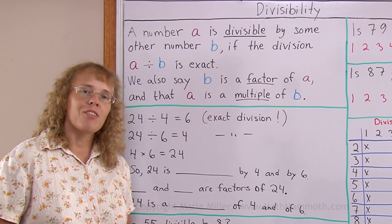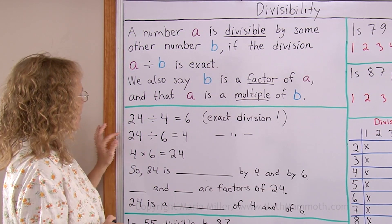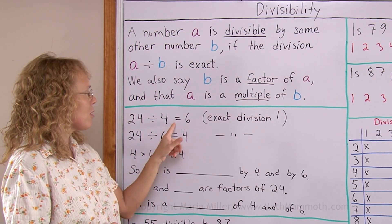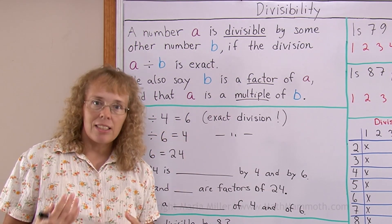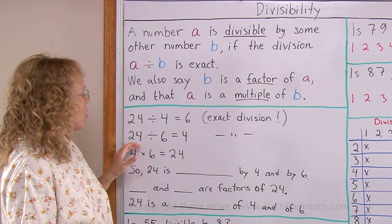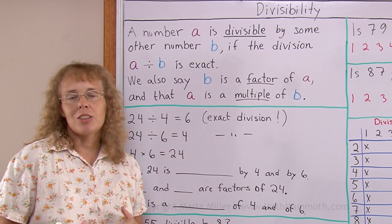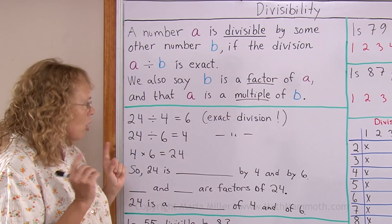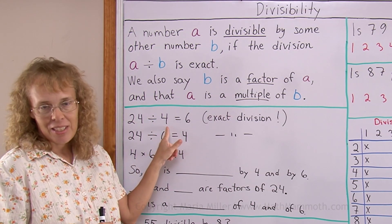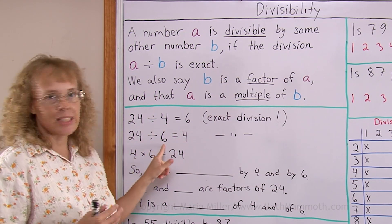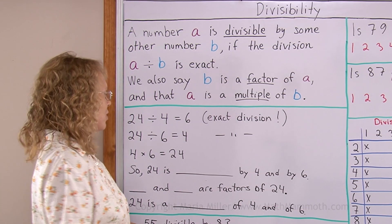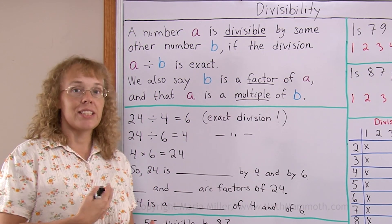This will make much more sense when I give you some examples. So here's an example: 24 divided by 4 equals 6. That's an exact division, right? And 24 divided by 6 equals 4 of course. Two exact divisions. So 24 is divisible by 4, and 24 is divisible by 6 too. Because the divisions were exact.